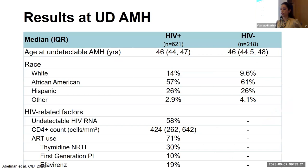At the first undetectable AMH visit, the age of undetectable AMH was similar between the HIV-positive and HIV-negative groups, at approximately 46. Undetectable HIV viral load was at 58%. Those are the most important highlights from the baseline characteristics given time constraints.